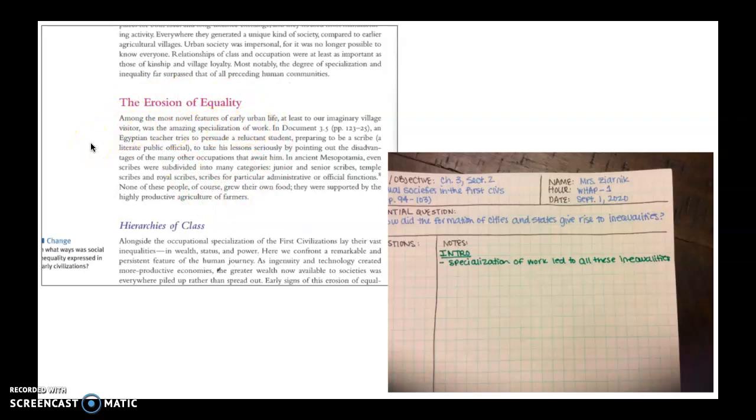So because in this section we're talking about how did the formation of cities and states give rise to inequalities. As I'm reading through, it says among the most novel features of early urban life was the amazing specialization of work. So as I'm reading through this, this is really talking about that idea of specialization or this idea that I don't have to do everything in my life. I can go to a market and buy food. I have somebody who is going to make tools for my farm and I don't have to do each of those things throughout my entire day. So this is specialization where I focus on that one task.